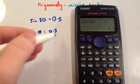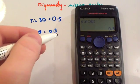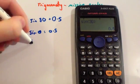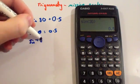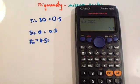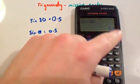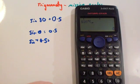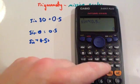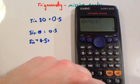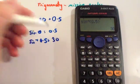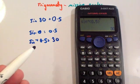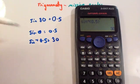So, if you know that the sine of an angle is 0.5, to work out what the angle would be, you would do the inverse sine of 0.5. If you press shift and the sine button and then type in 0.5 and press equals, you get 30 degrees. That's telling you that if you were to do the sine of 30 degrees, you would get 0.5.